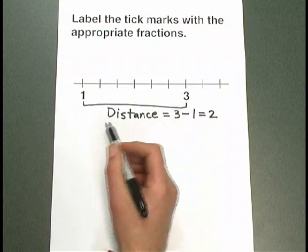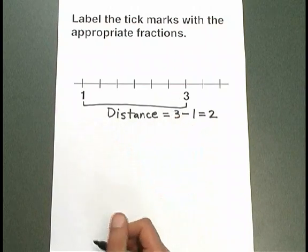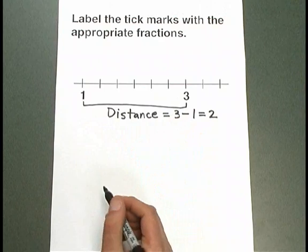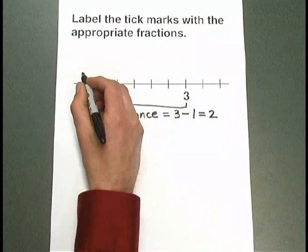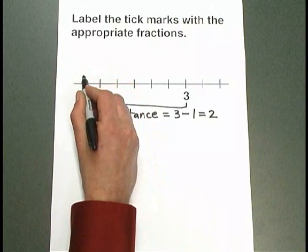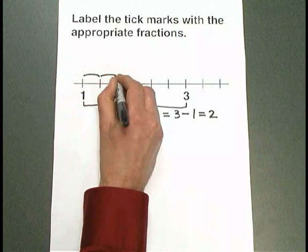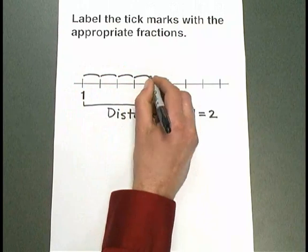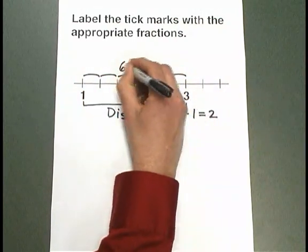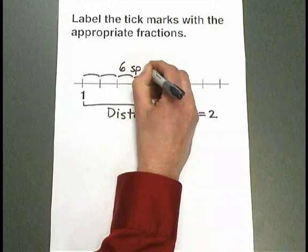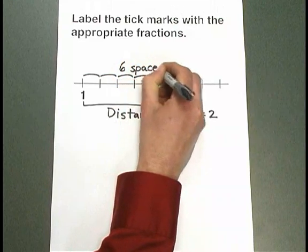Now, we also need to count the number of spaces between the two numbers that we've used. Not the tick marks, but the spaces in between. There's 1, 2, 3, 4, 5, 6 spaces. Six spaces in between the 1 and the 3.